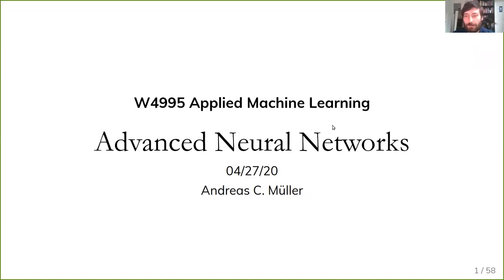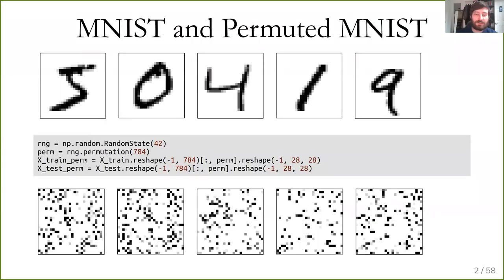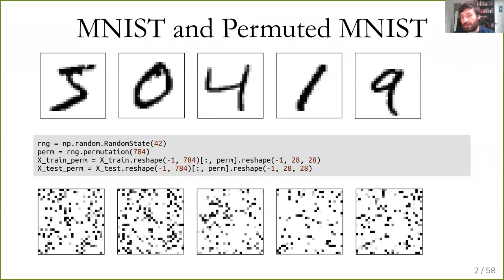Today we'll keep going, talking about convolutional neural networks and some more advanced neural network techniques. The first thing I wanted to highlight is the difference between convolutional neural networks and other algorithms we've looked at so far. Here I'm looking at two different datasets: MNIST and a version of MNIST where I do a permutation of all the pixels. At the top you can clearly see digits 5, 0, 4, 1, and 9, whereas at the bottom this basically looks like noise, with the same permutation applied to each image.